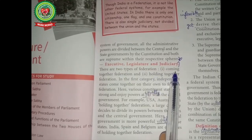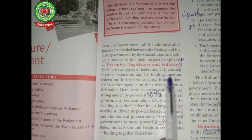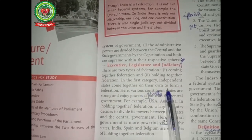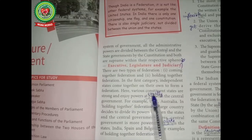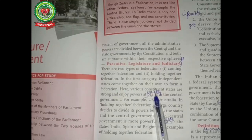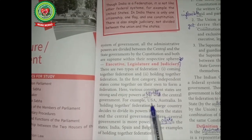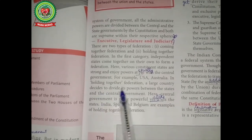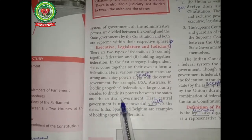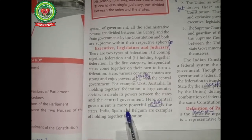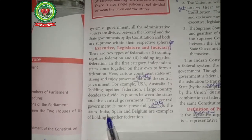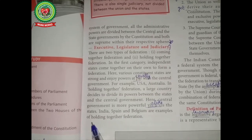There are two types of federation: coming together federation and holding together federation. In the first category, independent states come together on their own to form a federation. Here, the various constituent states are strong and enjoy powers at par — meaning equally — with the central government. Examples are the USA and Australia. In holding together federation, a large country decides to divide its powers between the states and the central government. Here the central government is more powerful vis-à-vis the states. India, Spain, and Belgium are examples of holding together federation.